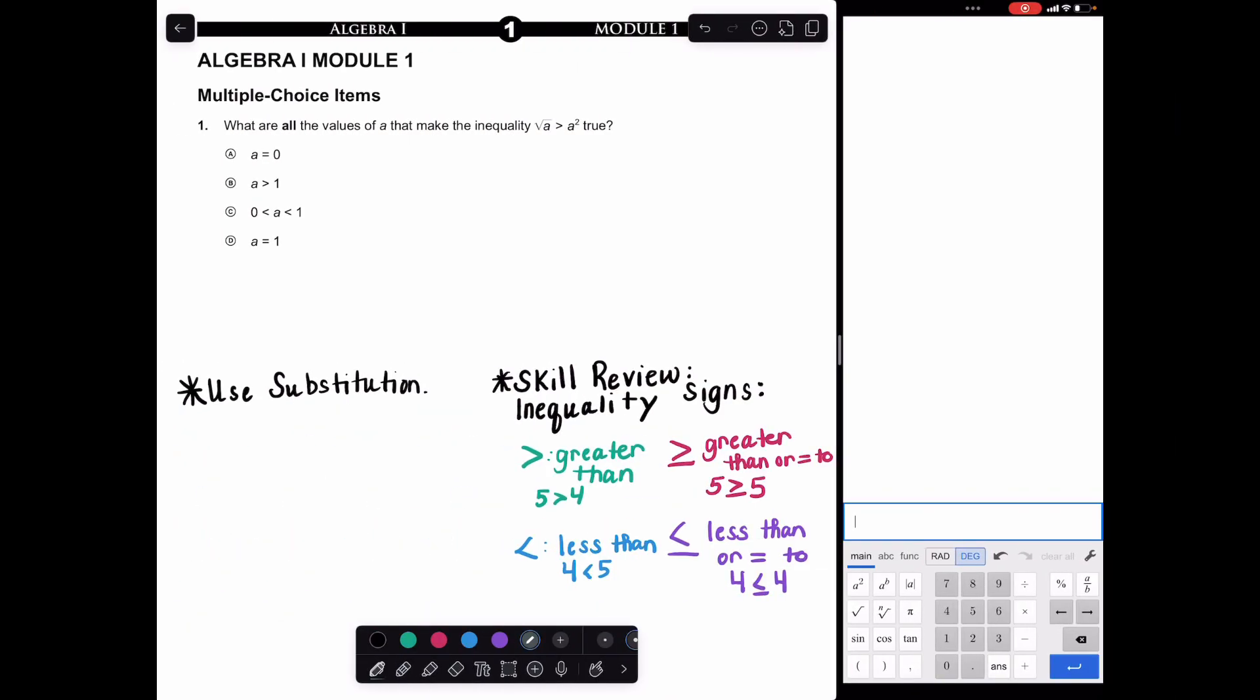Problem 1 covers square roots, squared terms, and inequality signs. When they ask what are all of the values of A that make this inequality true, that key word 'all' means it's more than just one number. Your best bet is to use your calculator and plug in numbers, picking a value for A within each range to test if it's true, because it has to be true for all values in that range.